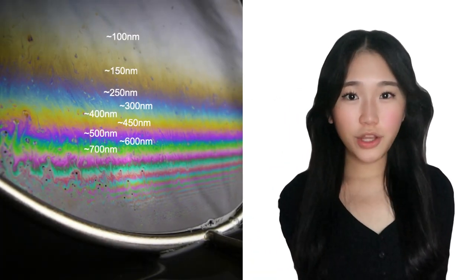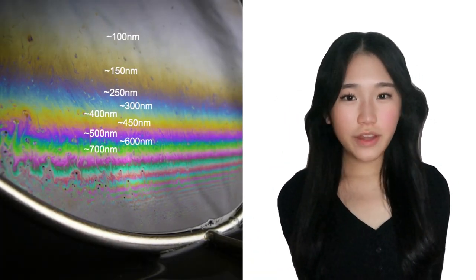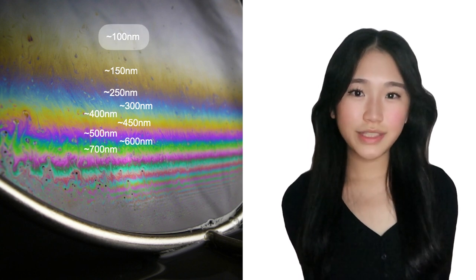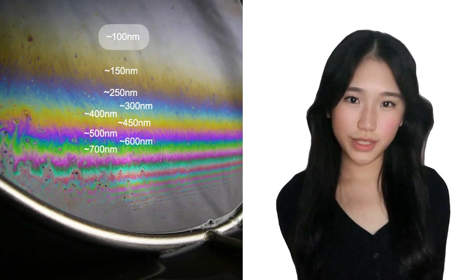For areas of the bubble that look almost silvery white the film is so thin that all wavelengths of light are reflected almost equally.